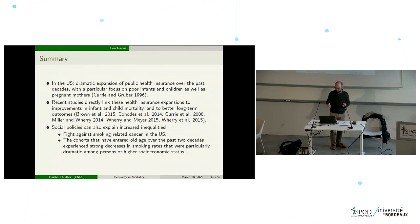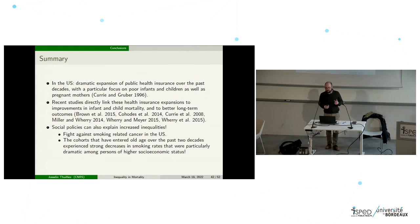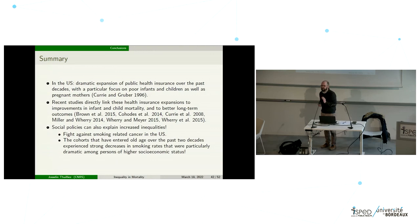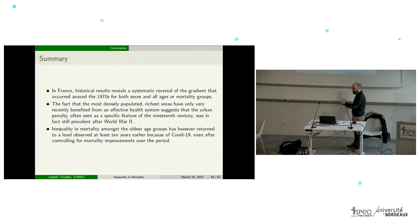In the US, mortality inequality declined for younger age groups — a positive message about the effect of public policies on health inequalities. Many micro-level studies using individual data and quasi-experimental analysis show that health insurance expansion in the US is improving infant and child mortality and leading to better long-term outcomes. Social policies can also paradoxically explain increased inequalities — for instance, the fight against smoking: cohorts entering older ages over the past two decades experienced strong decreases in smoking and therefore cancer rates that were particularly dramatic among high socio-economic status persons, possibly creating a selection effect.